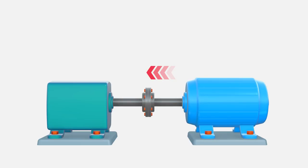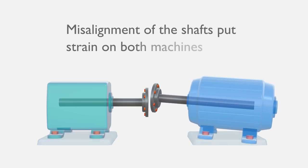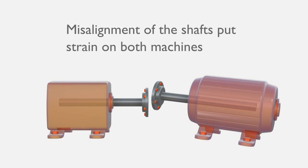The shaft in the motor or engine rotates and drives the shaft in the pump or other driven machine. Misalignment of the shafts puts strain on both the motor and the pump. It can damage the bearings, the couplings and other machine components.